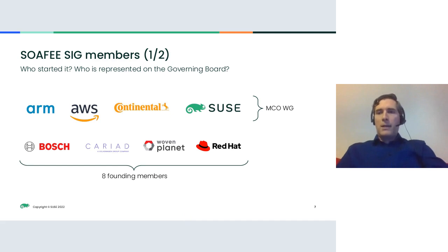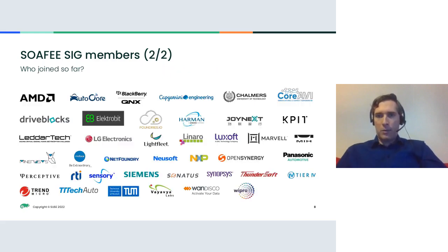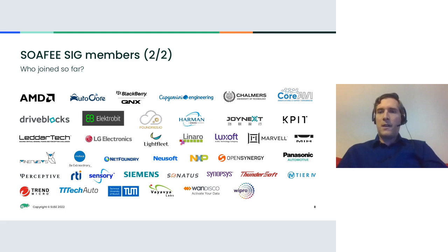Arm and the first four organizations started working on these topics mid last year in the Mixed Critical Orchestrator working group, with others joining early this year to formally launch the Sophie Special Interest Group. As of last night the full member list shows 48 organizations including silicon vendors, independent software vendors, universities, and consulting companies — quite a broad mix.